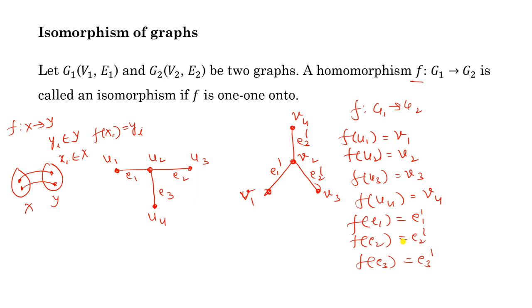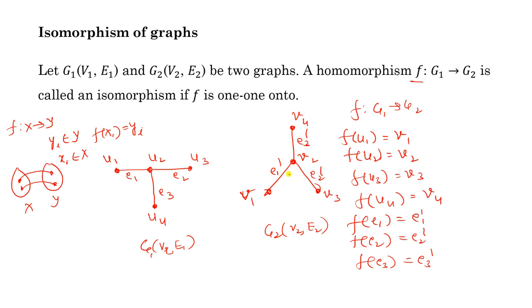This mapping f is one-to-one: for each vertex in g1, there is exactly one vertex in g2, and for each edge of g1 there is exactly one corresponding edge of g2. It is also onto: each vertex of v2 is the image of some vertex in v1, and each edge of e2 is the image of some edge in e1. So f is one-to-one and onto.